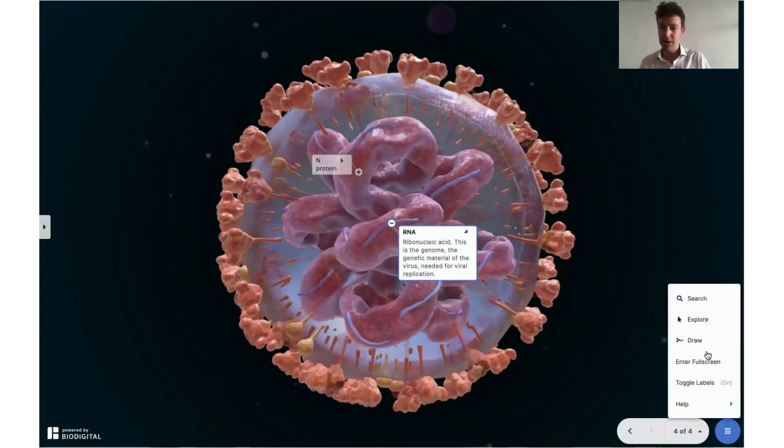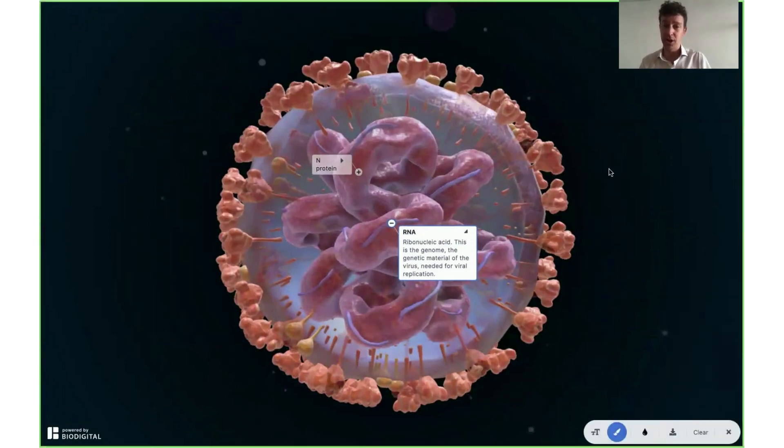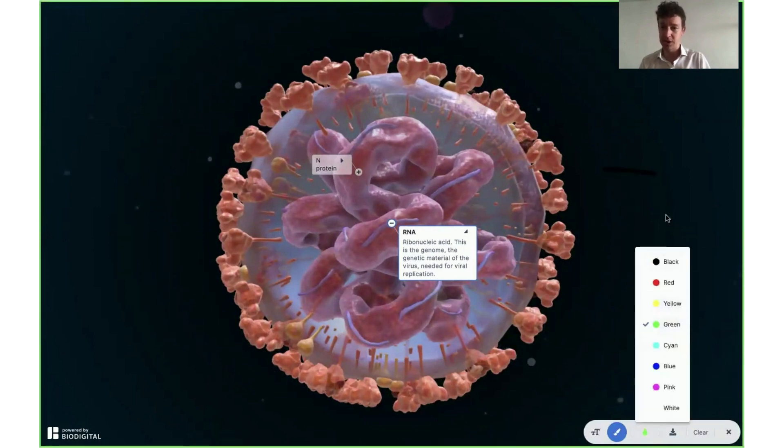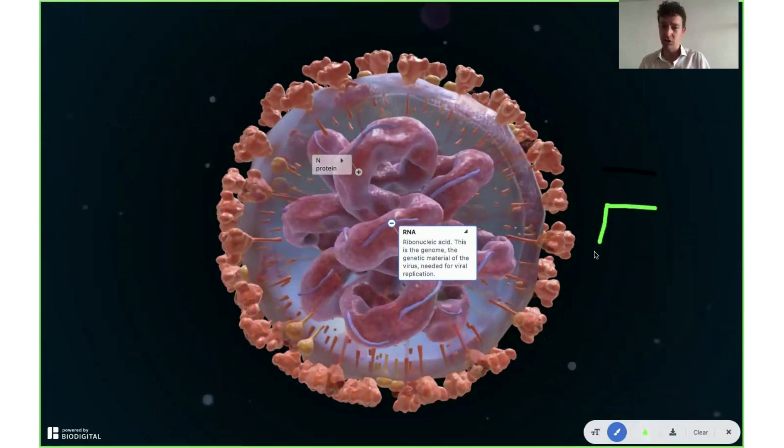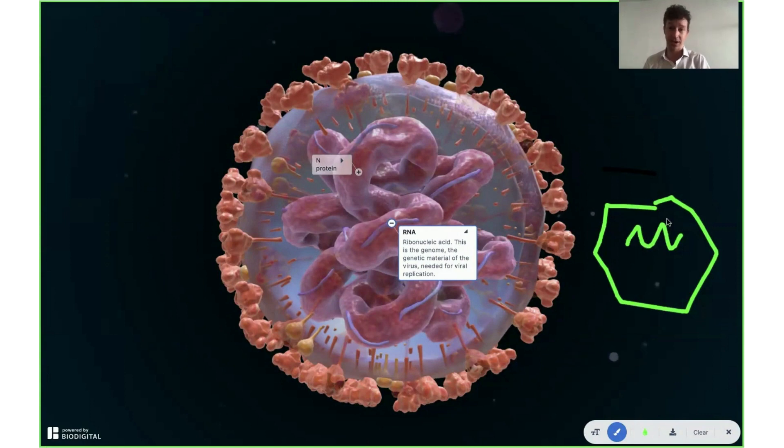So using this draw feature, this is the adenovirus, which is a harmless virus. I'm just going to draw it like this. That's your adenovirus right there. And they put this DNA, which codes for that RNA, which then makes the spike proteins inside this adenovirus, and they put that inside a vaccine.